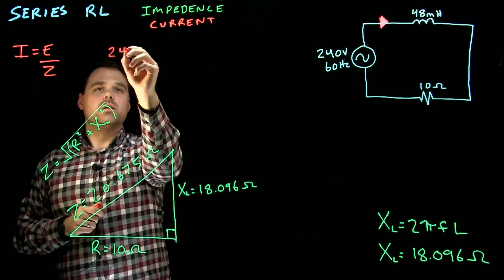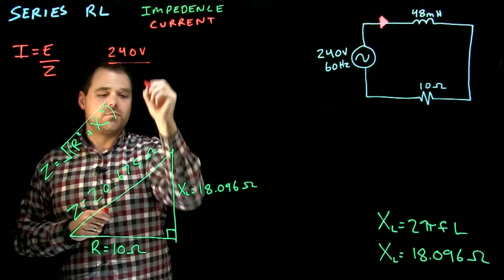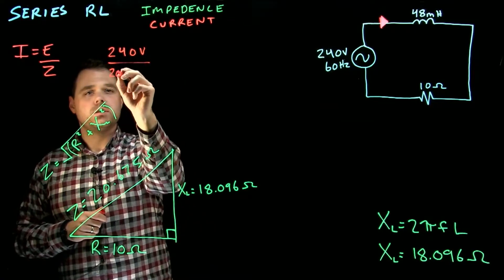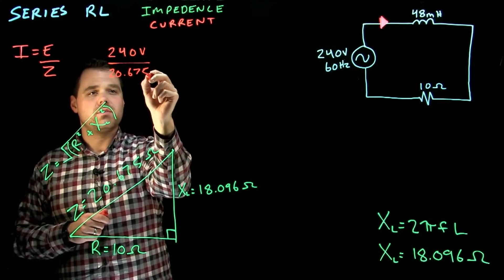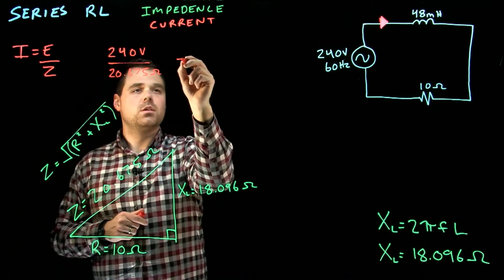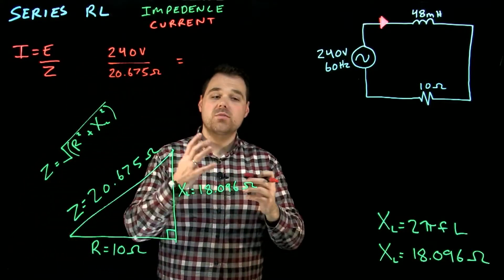We can go 240 volts divided by 20.675 ohms. And we can get our current for the circuit.